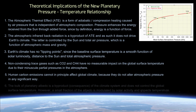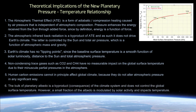Sixth, the bulk of planetary albedo is a byproduct or consequence of the climate system and does not control the global surface temperature. However, a small fraction of the albedo is modulated by solar activity and impacts planetary temperature on decadal to centennial timescales. We'll address this topic again later.